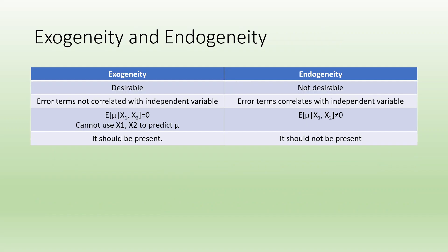Which is preferable: exogeneity or endogeneity? Exogeneity is more desirable; endogeneity is not desirable. In case of exogeneity, error terms are not correlated with the independent variable. In case of endogeneity, the error term is correlated with the independent variable.